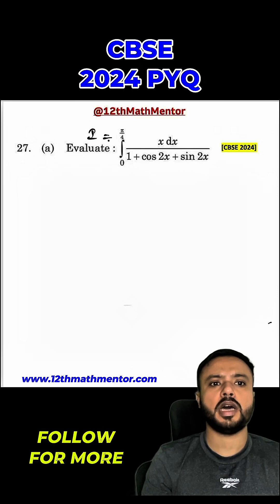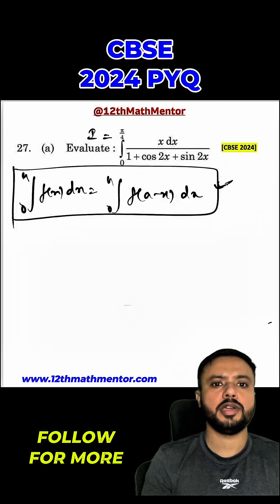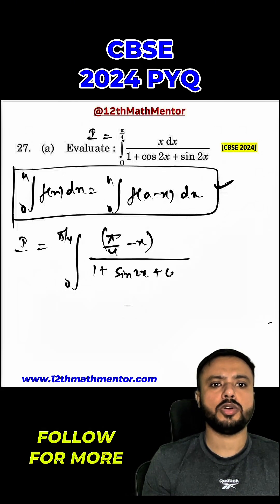Before we solve this integration, we will assume the given integral as i. And then we are going to use this particular property of definite integrals. I will rewrite i as 0 to pi by 4, pi by 4 minus x upon 1 plus sine 2x plus cos 2x dx.